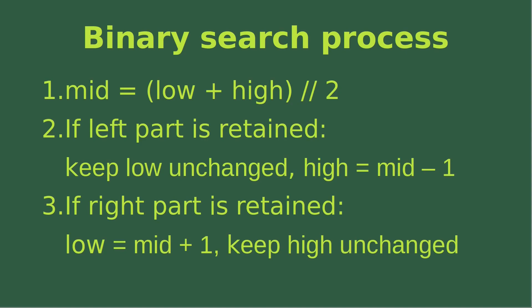If we need to retain the left-hand part, we just keep the low index unchanged, and then we change the high index by subtracting one from the mid-index. On the other hand, if the right part is retained, we just update the low index to mid plus one, and we keep the high index unchanged.